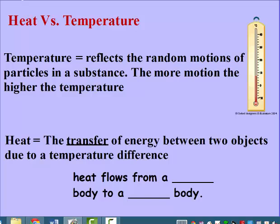Heat versus temperature. Temperature reflects the random motions of particles in a substance. The more motion, the higher the temperature.